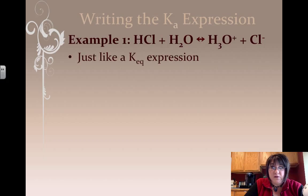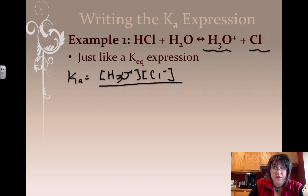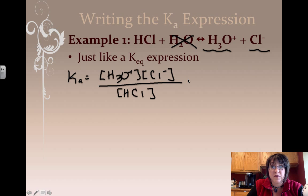To write a Ka expression, we write it like an equilibrium expression, where we put the products over the reactants. Ka equals, I have this ion and this ion in my products. So hydronium is H3O+, and chloride, Cl-, and that's all over the reactants. So I'll put HCl in here, because that one is aqueous. But I'm not going to put water in there, because liquids do not get to be in the equilibrium expression. There's the Ka for hydrochloric acid.